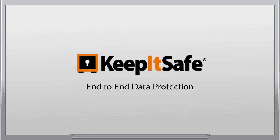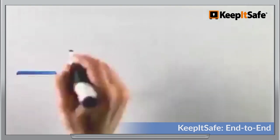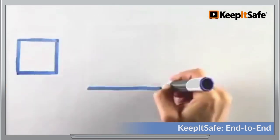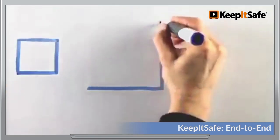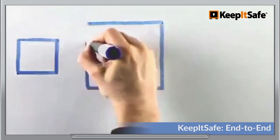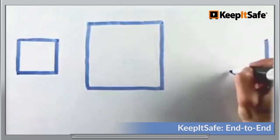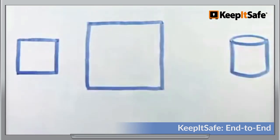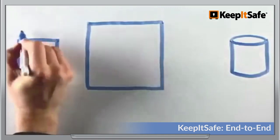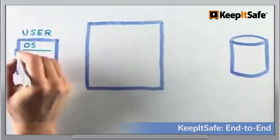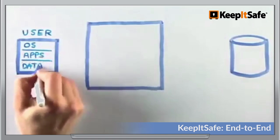We all know that secure data is at the top of the list when it comes to protecting your business, and there are lots of great ways to do this. However, focusing only on data misses the bigger point. Will you be able to open your data later? Keep It Safe DR Software is the complete solution to the future of data security and data access.